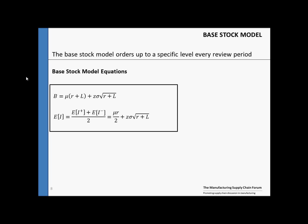Our equations for the base stock model are given here. As we saw before, our base stock level is defined here, where B, our base stock level, is equal to mu times R plus L plus the safety stock. The safety stock is Z sigma square root of R plus L. Our expected inventory or average inventory equals mu times R divided by 2 plus Z sigma square root of R plus L.